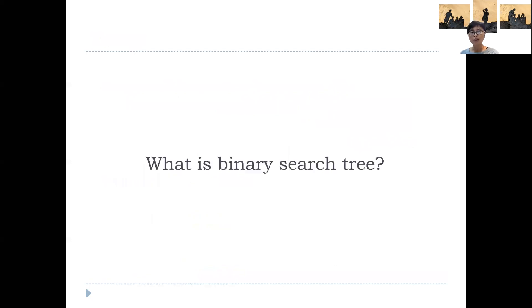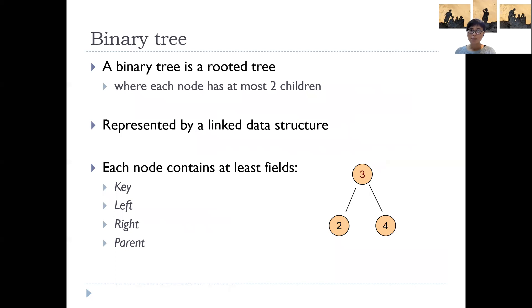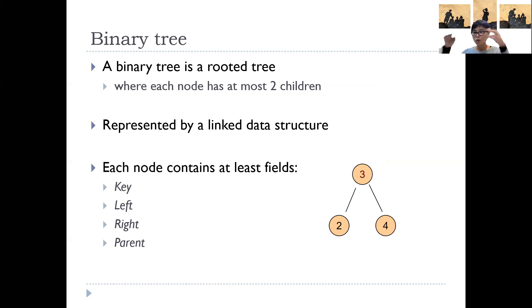So what is a binary search tree? A binary search tree first has to be a binary tree. A binary tree is a rooted tree where each node has at most two children, and we order these two children — one is called the left child and the other the right child. This tree data structure is maintained using pointers.